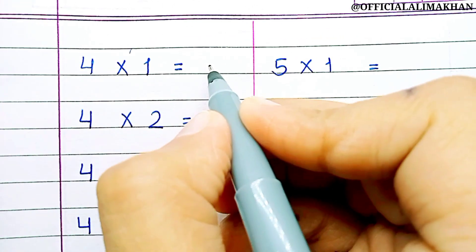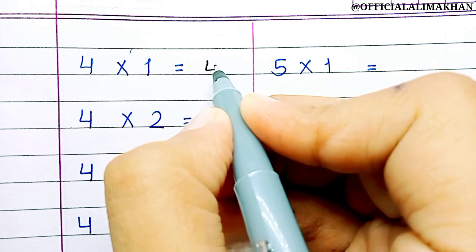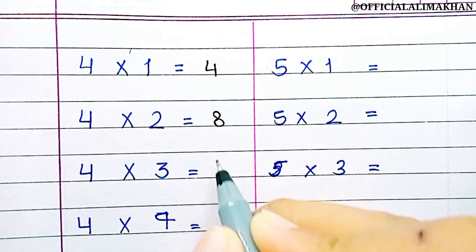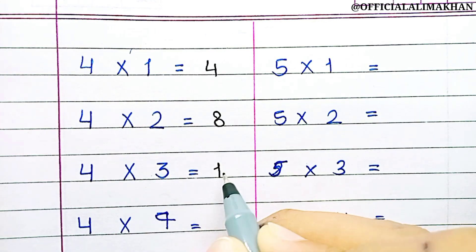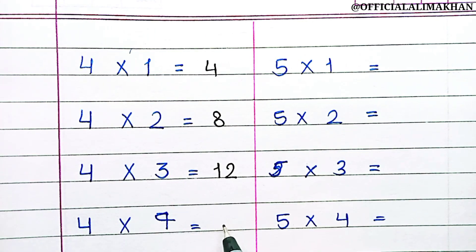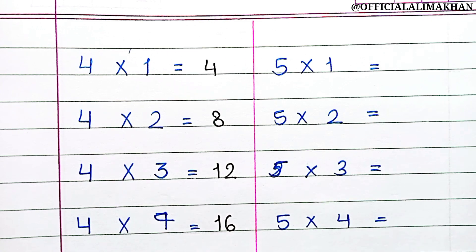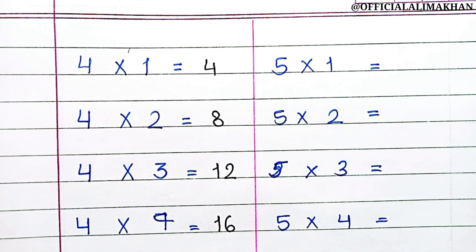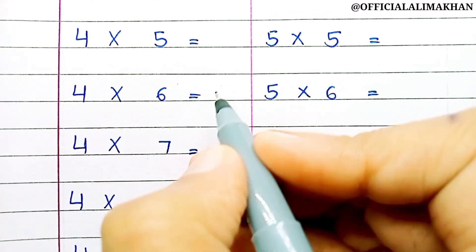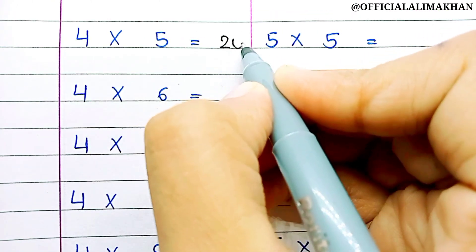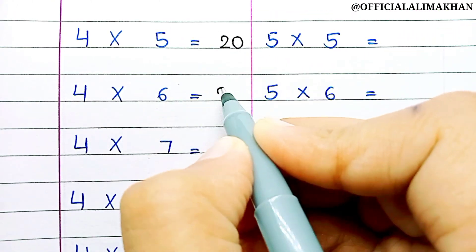4 1s are 4, 4 2s are 8, 4 3s are 12, 4 4s are 16, 4 5s are 20.